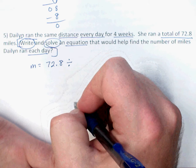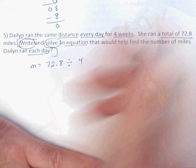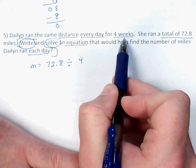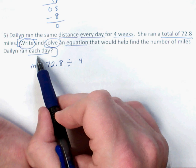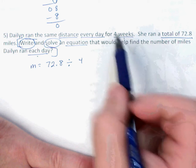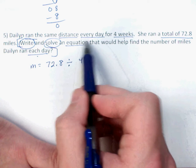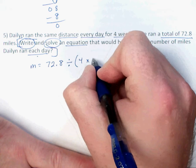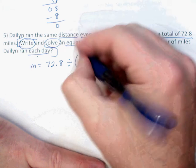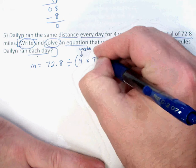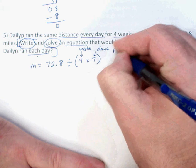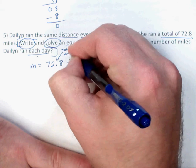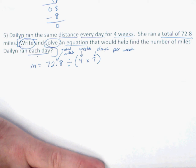If you're in a hurry, you might just divide by four weeks and move along. Here's the problem: it's asking for each day, so I need the total number of days. I don't have the total number of days — I just have the number of weeks. But it says she ran every day for those four weeks, and there are seven days in a week. So I'll multiply weeks by days per week to get total days.